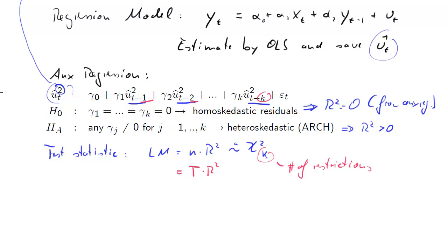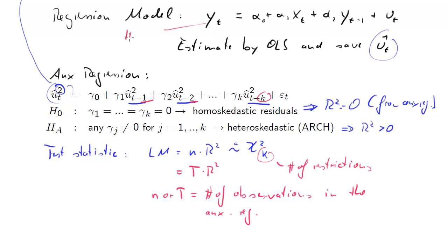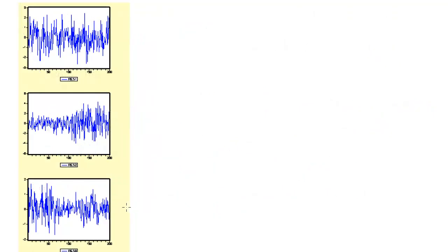I should mention that with time series data, the sample size is sometimes labeled with capital T and sometimes with little n — you just need to know what that means. We have the number of observations in the auxiliary regression. Of course, that means sometimes we are losing some observations. For instance, if in the original regression model we have 105 observations and we include k equal to 3 lags, we are losing three observations, so the number of observations in the auxiliary regression is going to be 105 minus 3, equal to 102. When you use time series data and include lagged variables, you are losing observations — you have to be aware of that.